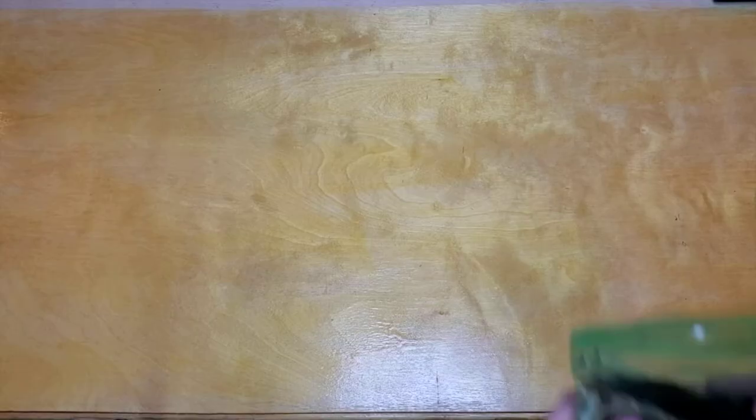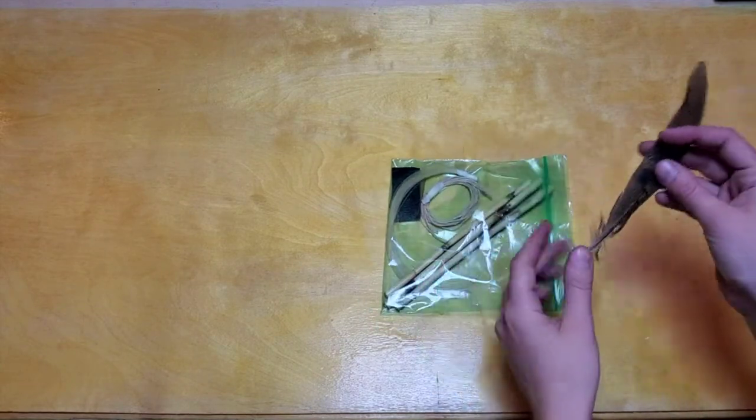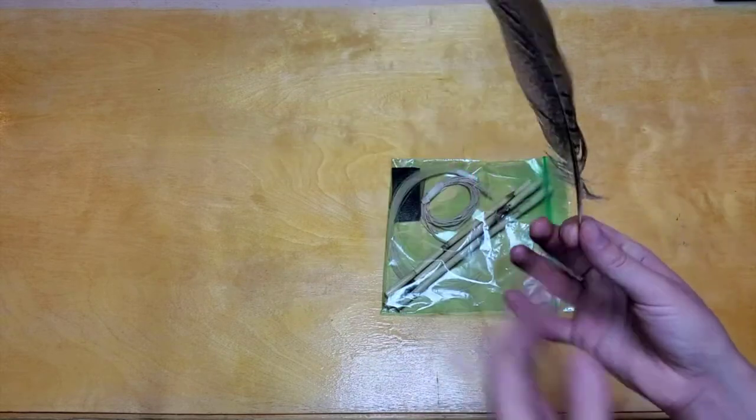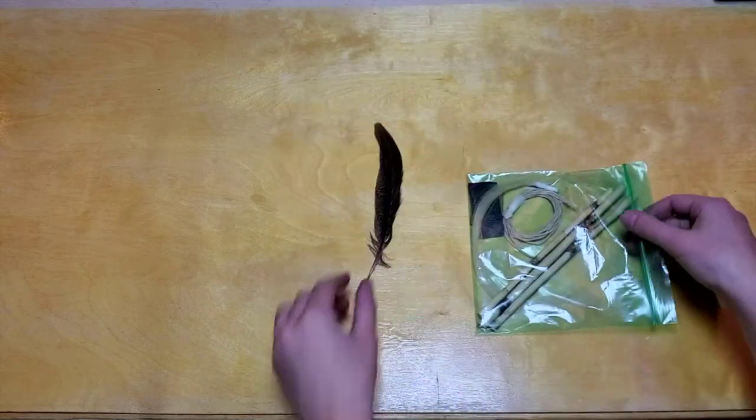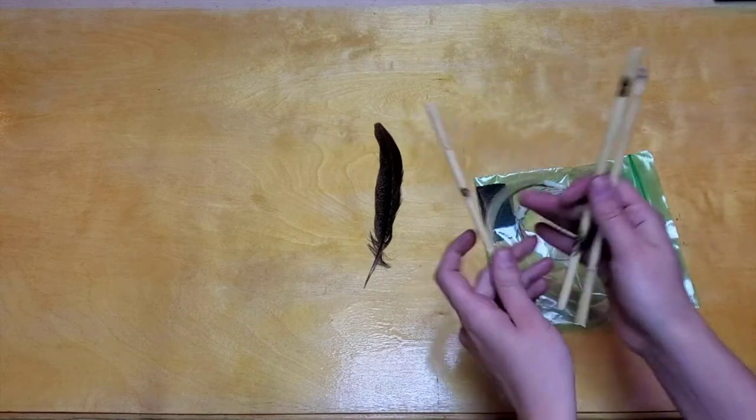Now for paintbrush number two you're going to use a reed and the other feather, a pheasant feather. So one that looks like it has tiger stripes. Now you're going to want to select your thinnest reed for this. Because that feather is a lot thinner than the tape wrapped around the horse hair, which will be for your next brush.